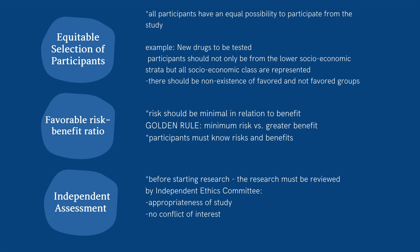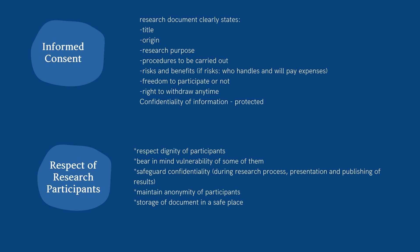Favorable Risk-Benefit Ratio: The golden rule applies — minimum risk versus greater benefit. Independent Assessment: Before starting research, the research must be reviewed by an Independent Ethics Committee, which checks the appropriateness of the study and ensures there should be no conflict of interest. Informed consent is the process of telling potential research participants about the key elements of a research study and what their participation will involve. The informed consent process is one of the central components of the ethical conduct of research with human subjects.